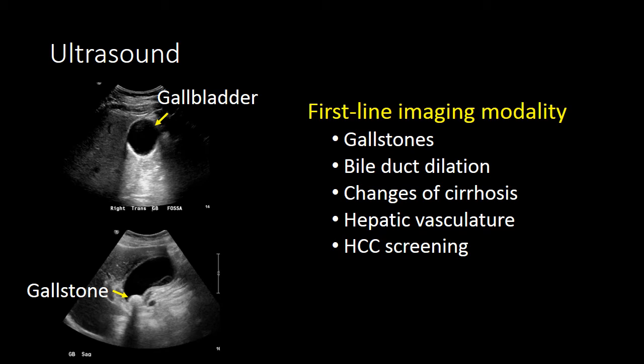Ultrasound is good at evaluating the liver parenchyma for findings of cirrhosis, it can look at patency of the hepatic vasculature, and it's also a nice, inexpensive way to look for masses within the liver.